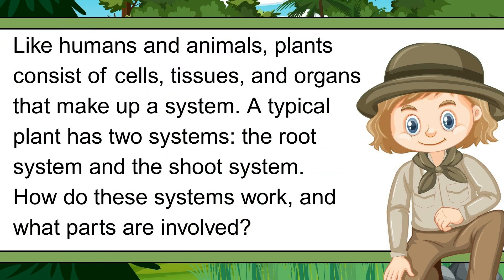For humans and animals, plants consist of cells, tissues, and organs that make up a system. A typical plant has two systems: the root system and the shoot system. How do these systems work, and what parts are involved? Let us find out.